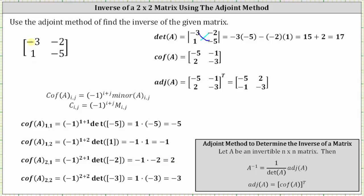Finally, we have cofactor A sub 2,2, which is equal to negative 1 raised to the power of 2 plus 2 times the minor — that is, the determinant of the matrix formed after eliminating row 2 and column 2, which gives us the determinant of the 1 by 1 matrix with an entry of negative 3. Simplifying, the fourth power of negative 1 is 1, and the determinant is negative 3, so the cofactor is 1 times negative 3, which is negative 3.